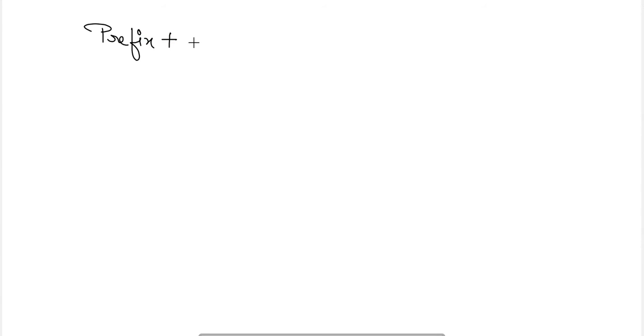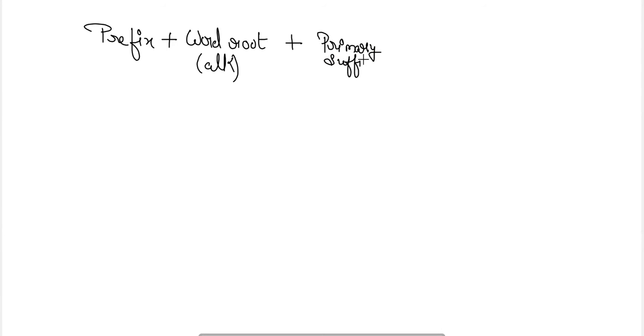Welcome friends, let's continue with organic chemistry - some basic principles. In the last class we studied about the IUPAC naming system. Let's continue with that topic. The IUPAC naming system is: prefix plus word root (also termed as the ALK name) plus the primary suffix plus the secondary suffix.